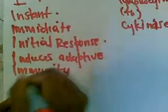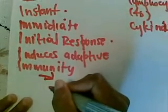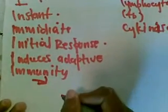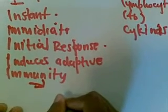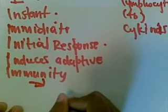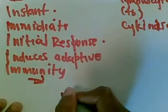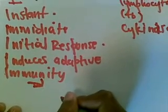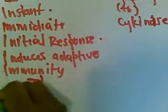Innate immunity can also produce chemical messengers that stimulate and influence adaptive immunity — meaning adaptive immunity is being stimulated and influenced by innate immunity.